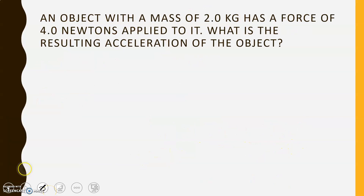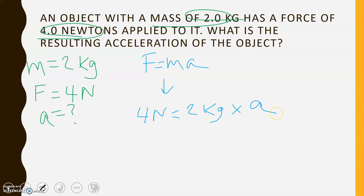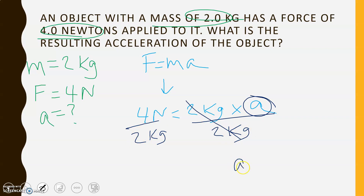Last problem: an object with a mass of 2 kilograms has a force of 4 Newtons applied. What is the resulting acceleration? Write F equals MA, then plug in: 4 Newtons equals 2 kg times A. Divide both sides by 2 kilograms — it cancels on the right, leaving A equals 4 divided by 2, which is 2 meters per second squared.